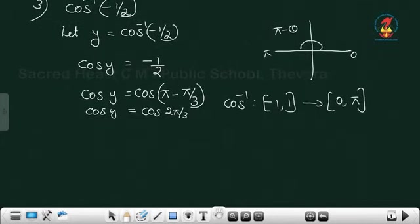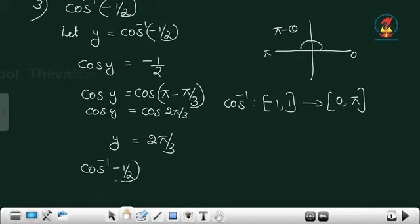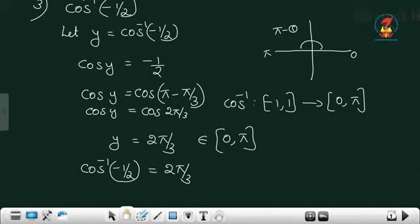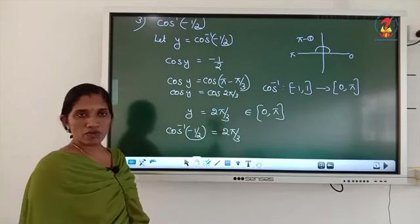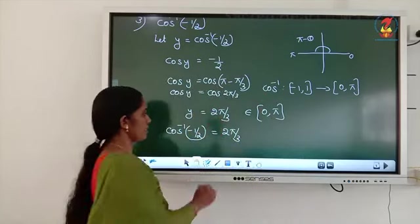So y equals 2 pi by 3. Cos inverse of minus half means it is 2 pi by 3. Is it in the interval 0 to pi? Pi by 3 means 60, and 60 into 2 is 120. 120 is in the second quadrant and belongs to [0, π], so that answer is correct.